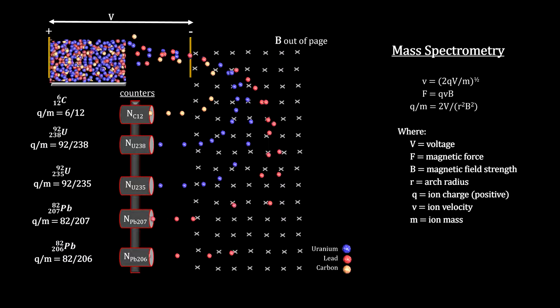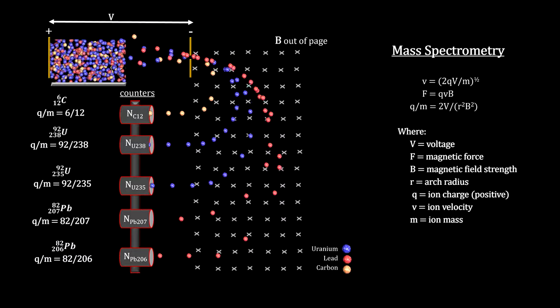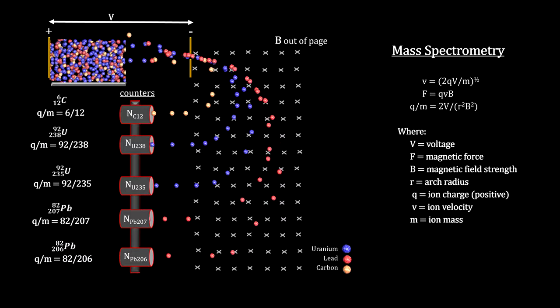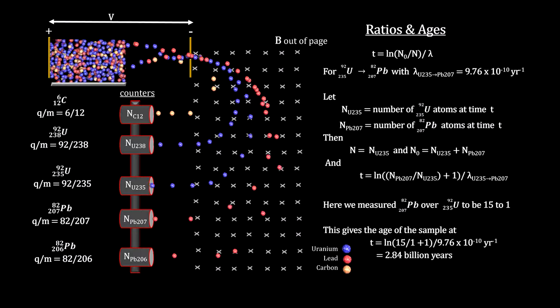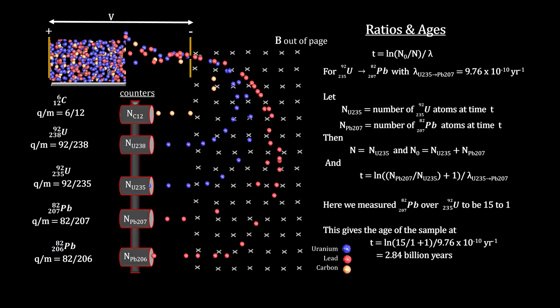The mass spectrometer can run for hours capturing these streams and counting the numbers and producing the ratios. And as we have seen, these ratios give us the age of the rock.